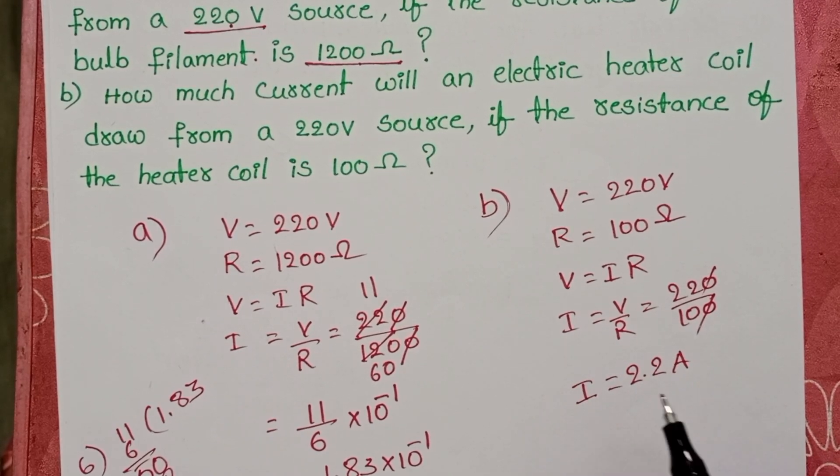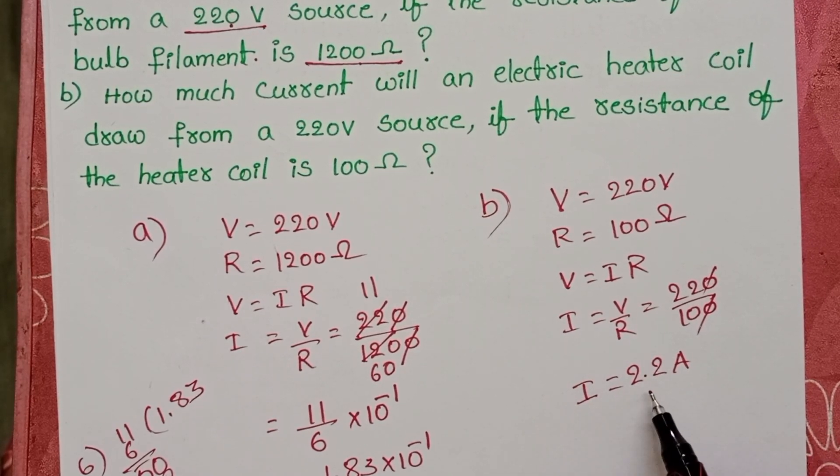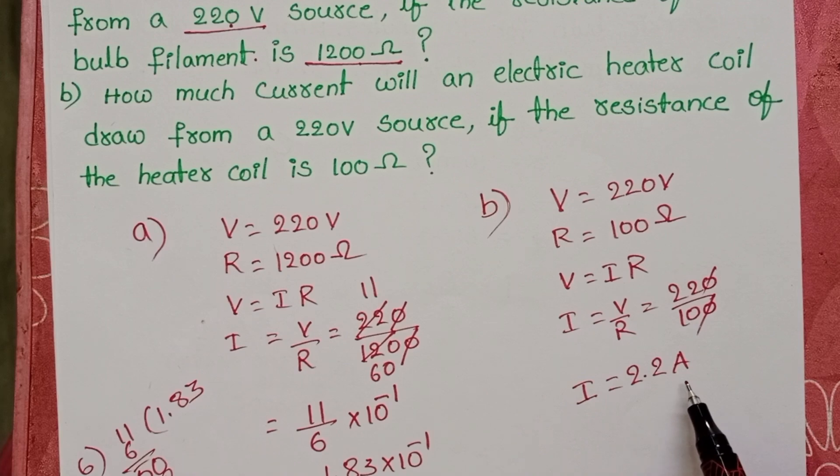The current passing through the heater coil is 2.2 amperes.